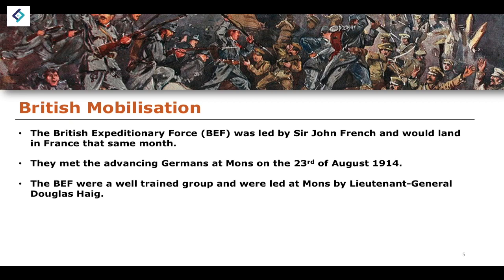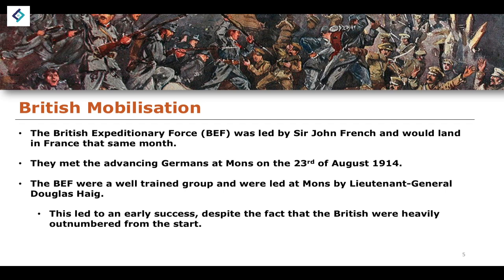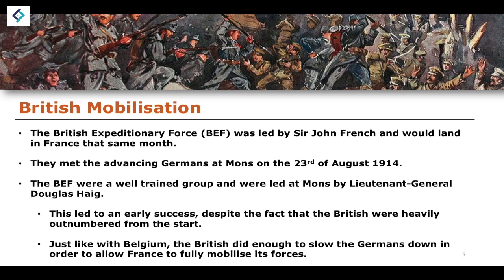Although the BEF was outnumbered by the German advance, it was a very well-trained group with high levels of technological advancement, notably the Enfield Rifles, and was led at Mons by Lieutenant General Douglas Haig. They were relatively successful in significantly slowing the German advance at Mons. Even though completely outnumbered, their training and sophisticated equipment caught the Germans by surprise. Like Belgium before them, they couldn't stop the advance entirely, but they did enough to allow France to fully mobilise its forces.